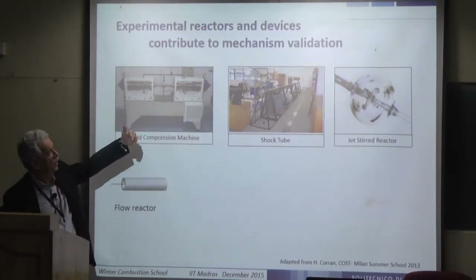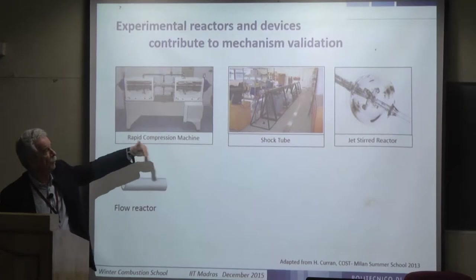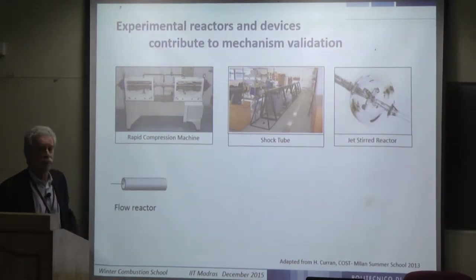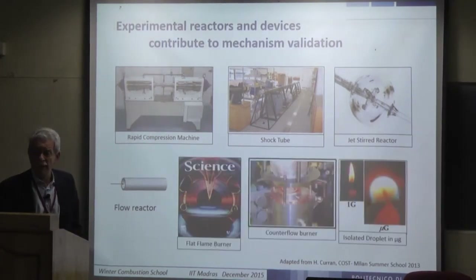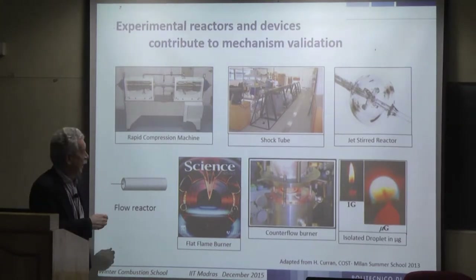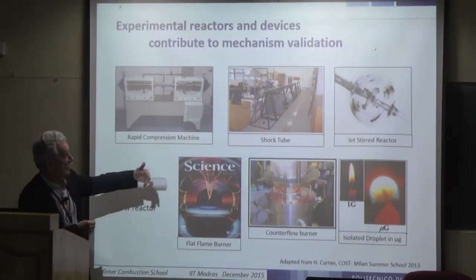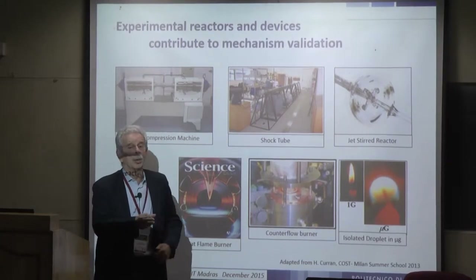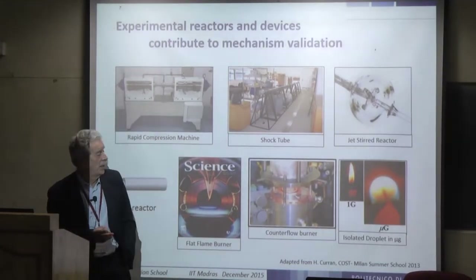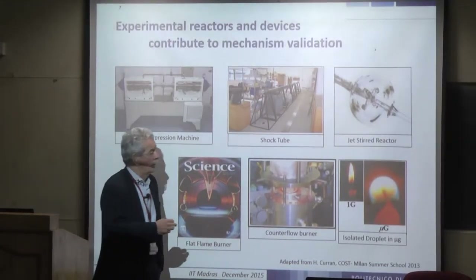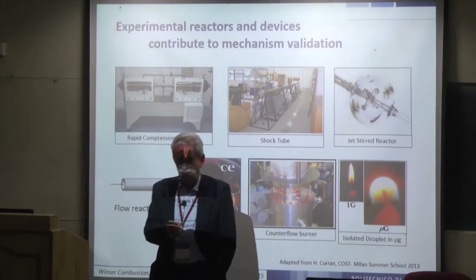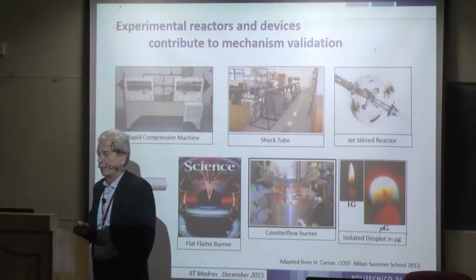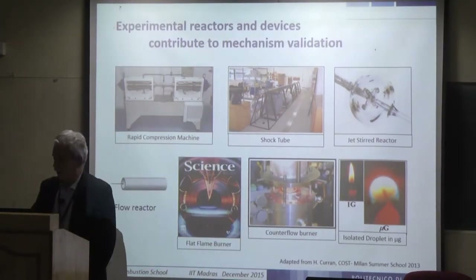The experimental reactors and devices include the rapid compression machine, shock tube, jet stirred reactor, and flow reactor. We can also have experiments done in flat flame burners or counter-flow burners, or use information from isolated droplets in microgravity in order to compare with experiment.